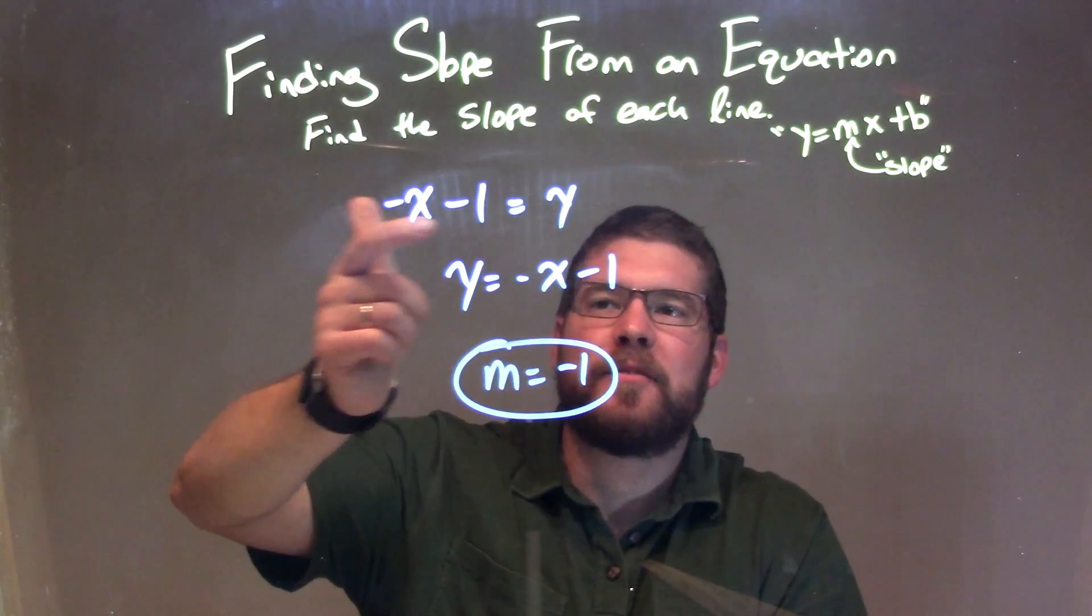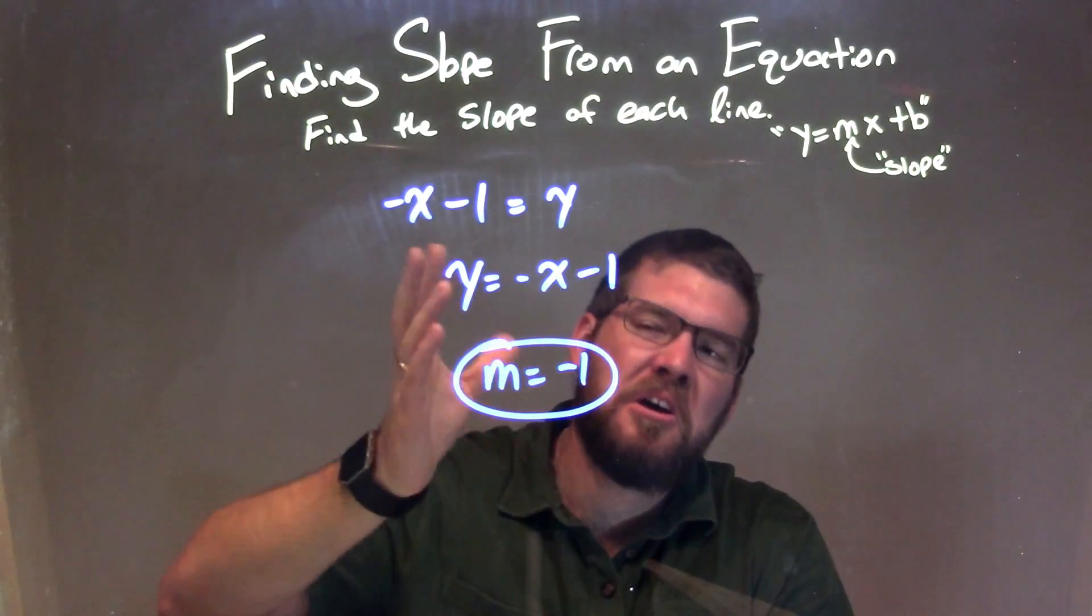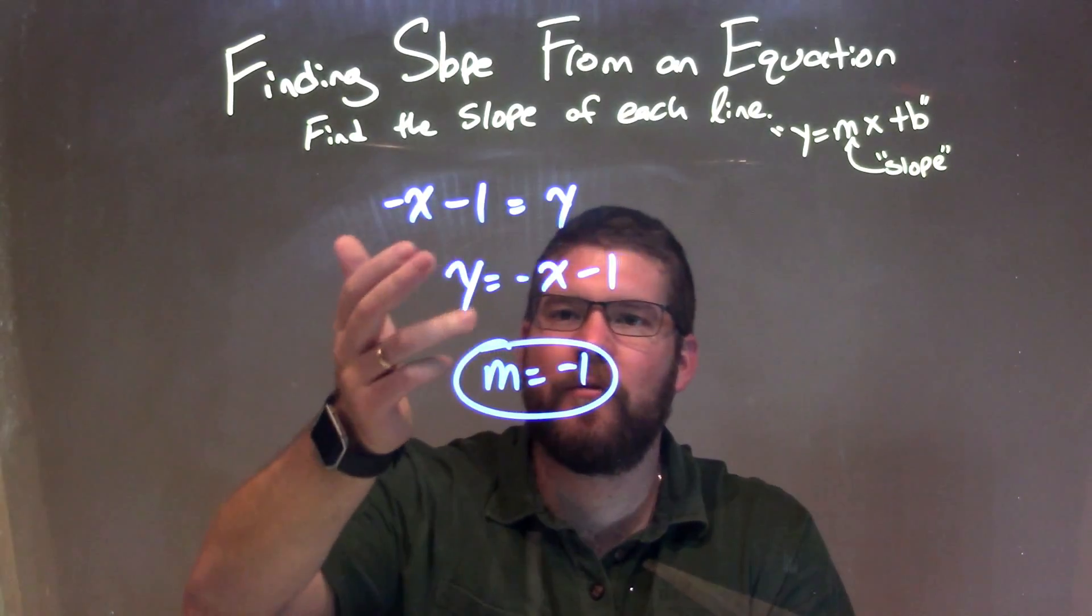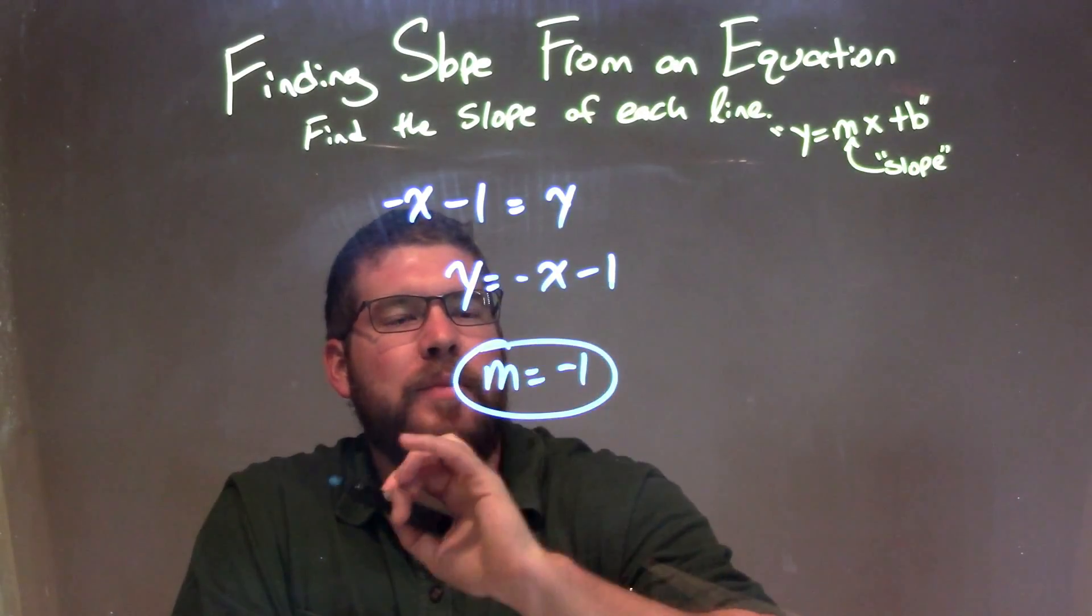We have negative x minus 1 equals y. y is already isolated. I need to write it in my slope-intercept form. So I rearrange it, have y come first, so I have y equals negative x minus 1. That's our y equals mx plus b form.